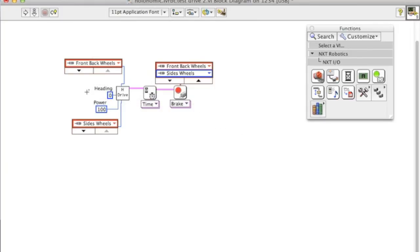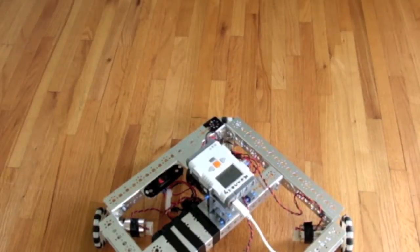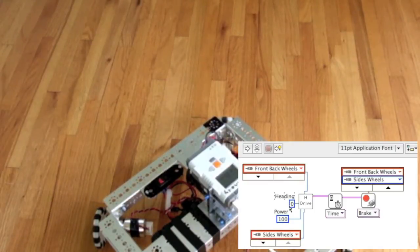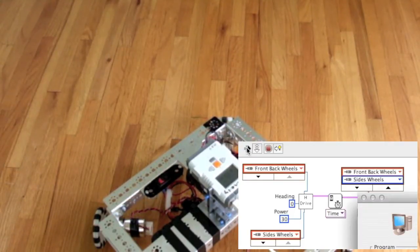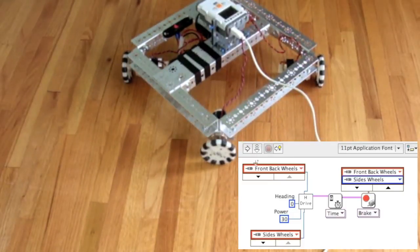Now we're ready to test it out. So the heading is set at zero. The power is at 100, but let's try it with 30. I'm going to play it and see what the robot does. It should be driving forward on a heading of zero. Let me see what it does.